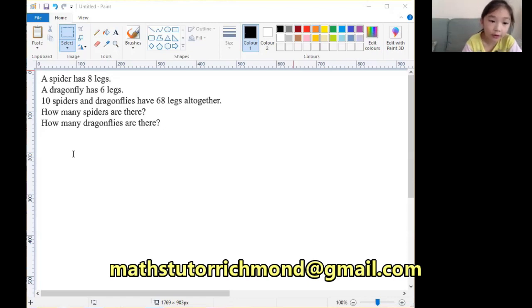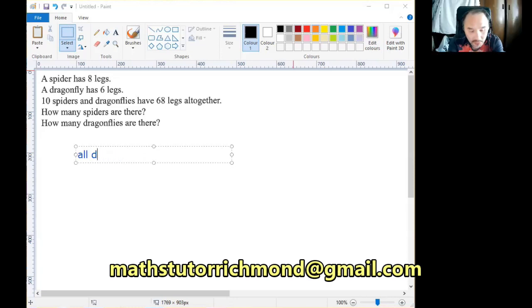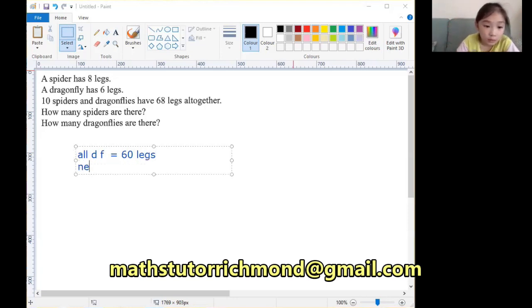If all dragonflies, there would be 60 legs altogether. I'm just gonna put DF for short. That would equal to 60 legs. Need 68, so 8 more legs needed.